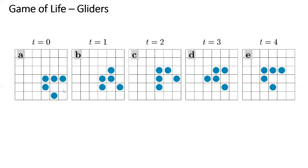In the standard game of life you update all cells simultaneously. You can also choose a different variant where you do random updates — like in the Ising model, where you choose a random element in the array and just update that value. This creates a non-deterministic output, because the output will depend on which element you choose to update first, which changes the behavior of the system.